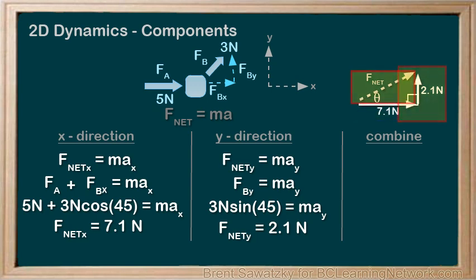F net x plus tail-to-head F net y, and our resultant F net goes from the start of the vector addition to the end. So, Pythagorean theorem allows us to determine the magnitude of F net, 7.4 newtons, which exactly matches our previous result.